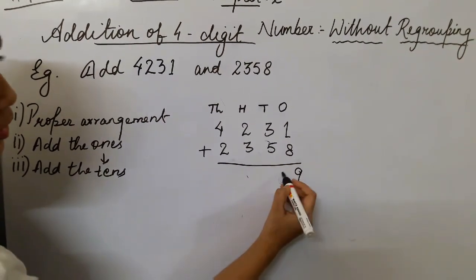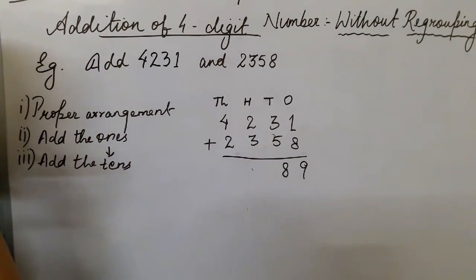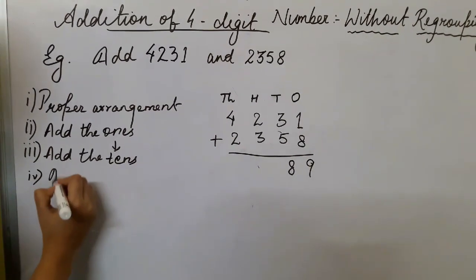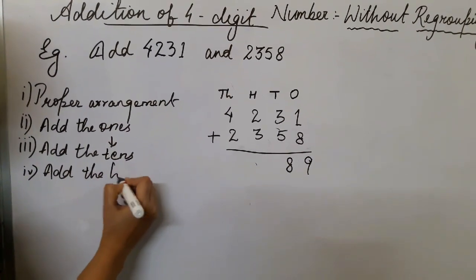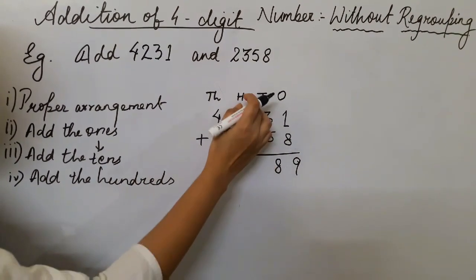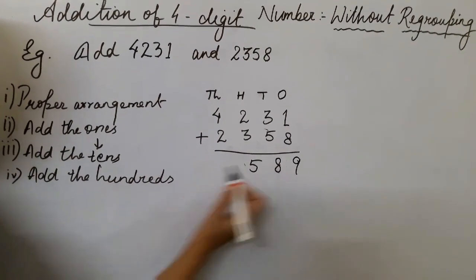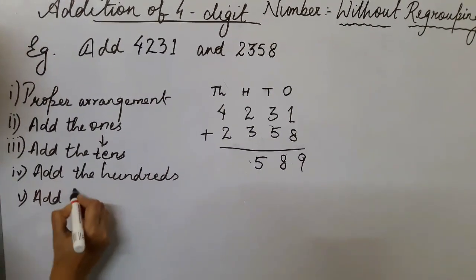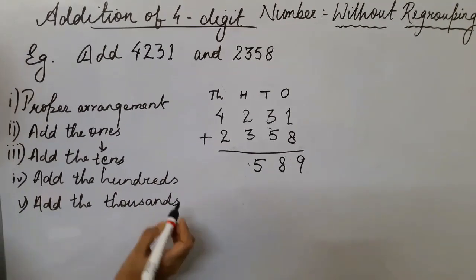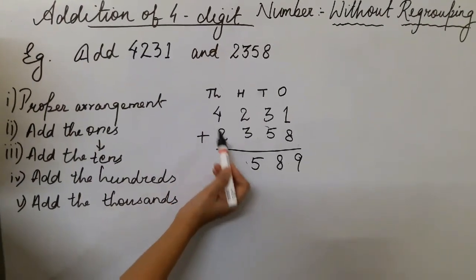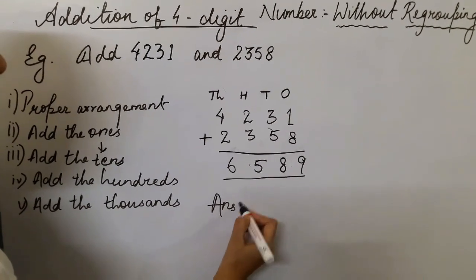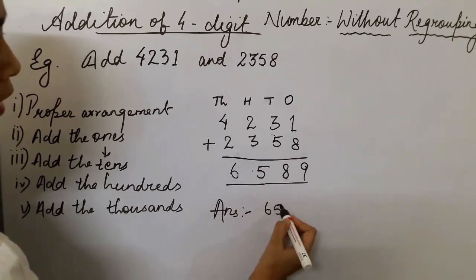You need to write in proper columns. After the tens, add the hundreds: 200 plus 300 gives you 500. And lastly, add the thousands: 4,000 plus 2,000 gives you 6,000. So your answer is 6,589.